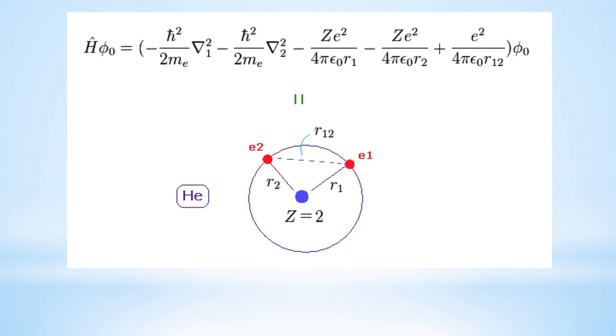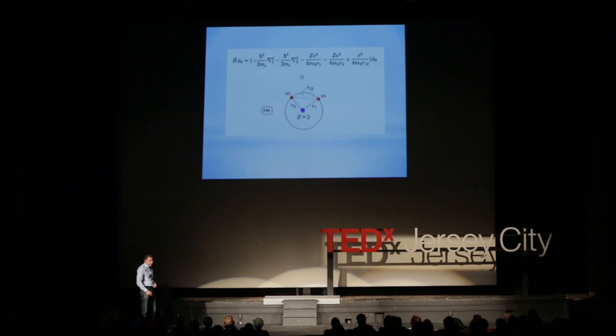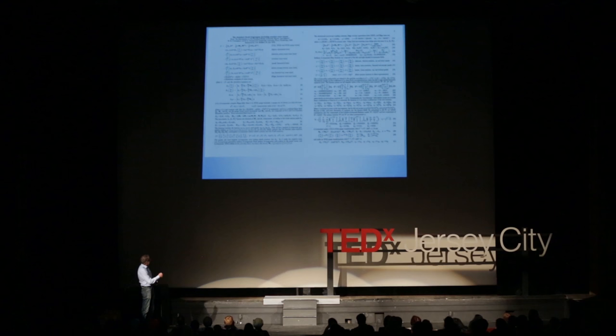Just to show you how it's advanced, this is a helium atom. It has a proton and two electrons, and that's an equation for it from the 1920s. And today, we know a lot more elementary particles than the proton and the electron, and this is what the equations look like.